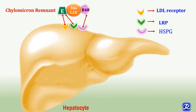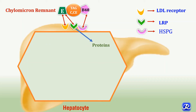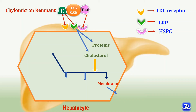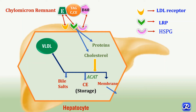Once inside the hepatocyte, the apoprotein portion is utilized for protein synthesis. The cholesterol taken up has multiple fates: it can be incorporated into the cell membrane; stored by the action of acyl-CoA acyltransferase; degraded into bile acids and then bile salts, which are secreted back to the intestine via bile; or incorporated into VLDL formation. VLDL is another lipoprotein synthesized in hepatocytes.